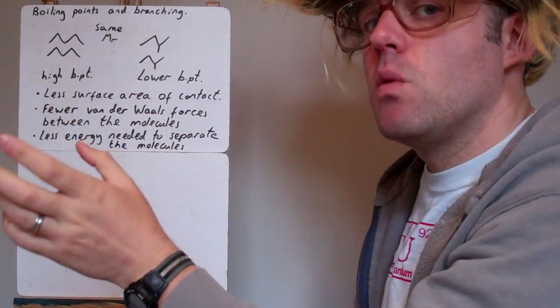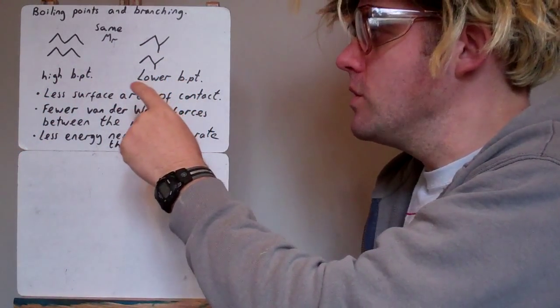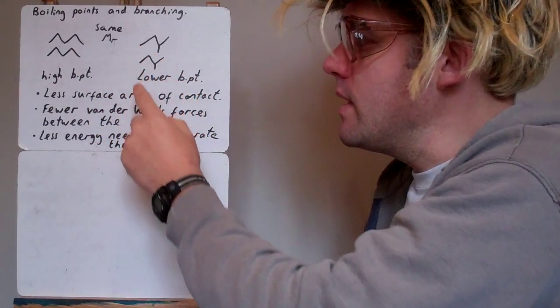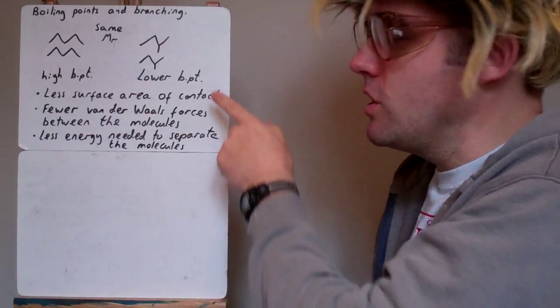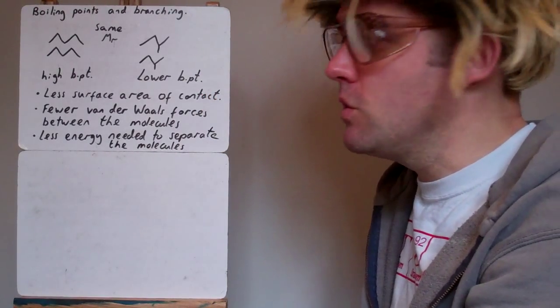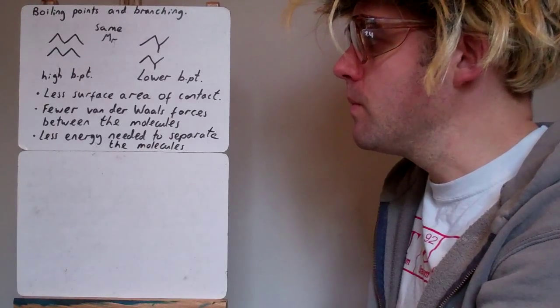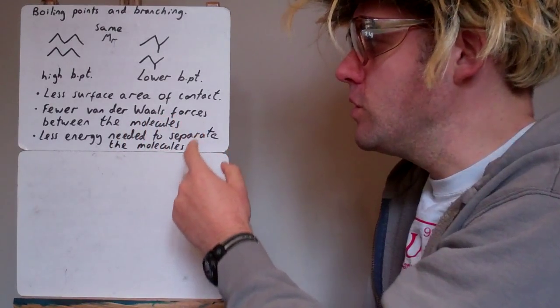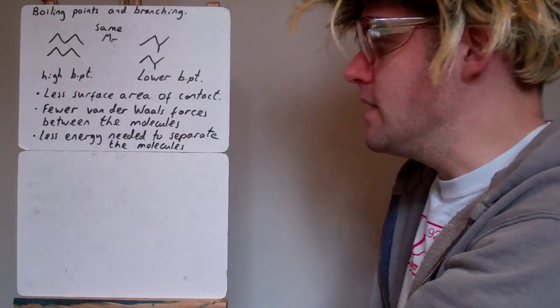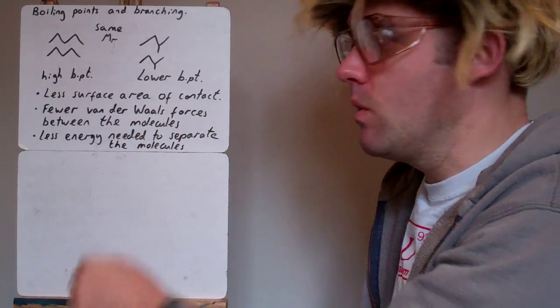So you'd think van der Waals forces would be the same, but they're not because there's less surface area of contact between the molecules when it's branched. So these branched molecules have less surface area of contact or fewer points of contact between the molecules. This means fewer van der Waals forces between the molecules when it's branched, so less energy needed to separate the molecules when they're branched.